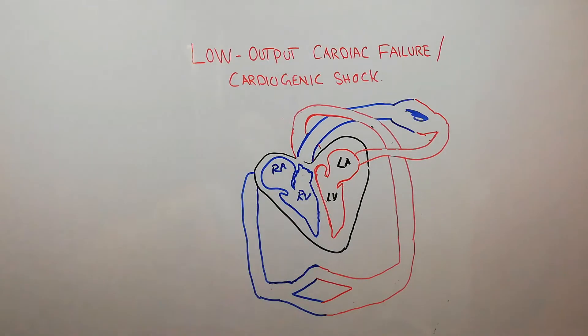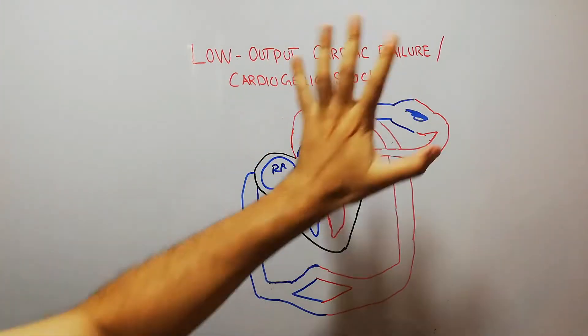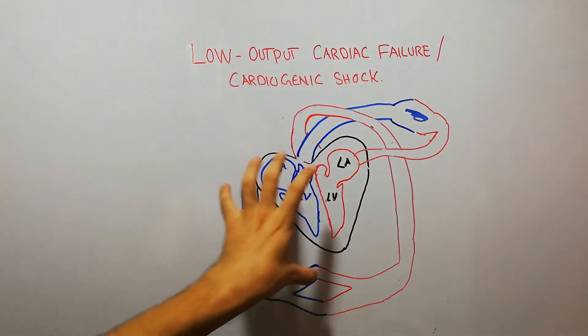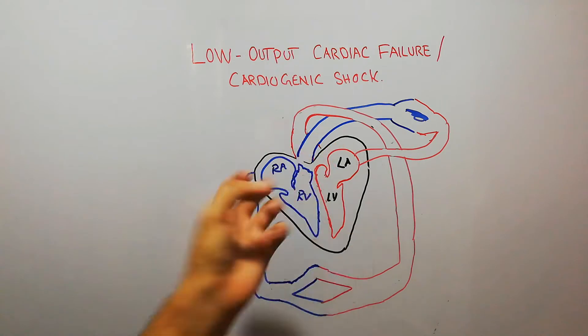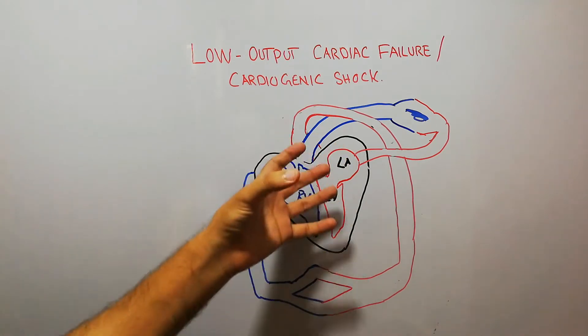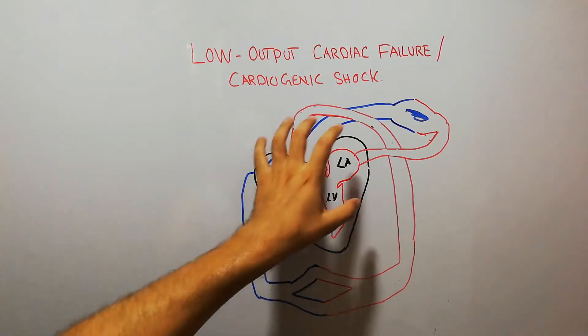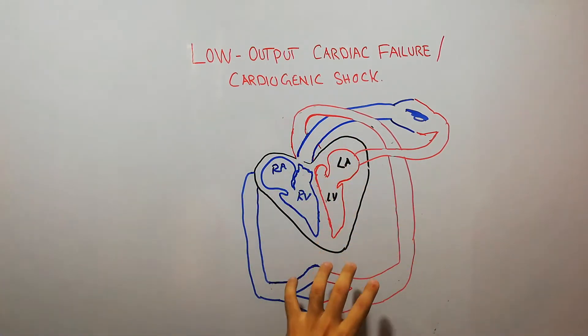Today in this lecture we are going to discuss cardiogenic shock or low output cardiac failure — what happens when the heart becomes so much weaker that it is unable to pump enough blood to fulfill the demands of the human body.